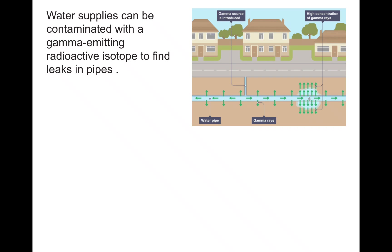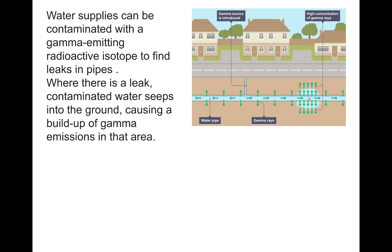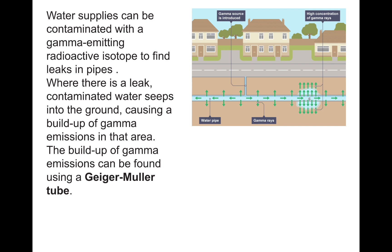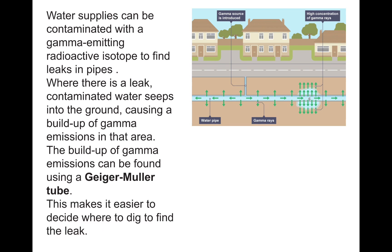Water supplies can be contaminated with a gamma-emitting radioactive isotope to find leaks in pipes. A gamma source is introduced into the system, and where there is a leak, contaminated water seeps into the ground, causing a buildup of gamma emissions in that area. The buildup can be detected using a Geiger-Muller tube. This tells workers exactly where to dig. If you have miles of pipeline and don't know where a leak is, you introduce a gamma source, which spreads throughout the system, and then use a gamma detector over the road surface to find the spike - and that is where the issue is.